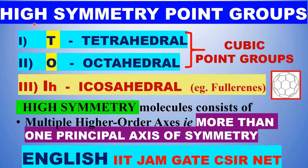What is the significance and characteristics of very high symmetry point groups? In very high symmetry point groups, the principal axis of symmetry occurs in multiples — there is more than one principal axis of symmetry. This is the speciality of high symmetry point groups. In contrast, in low symmetry molecules, the principal axis such as C2 occurs only once.